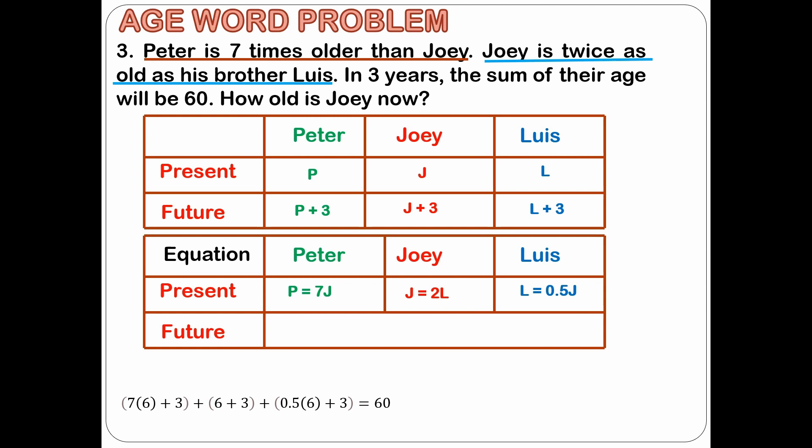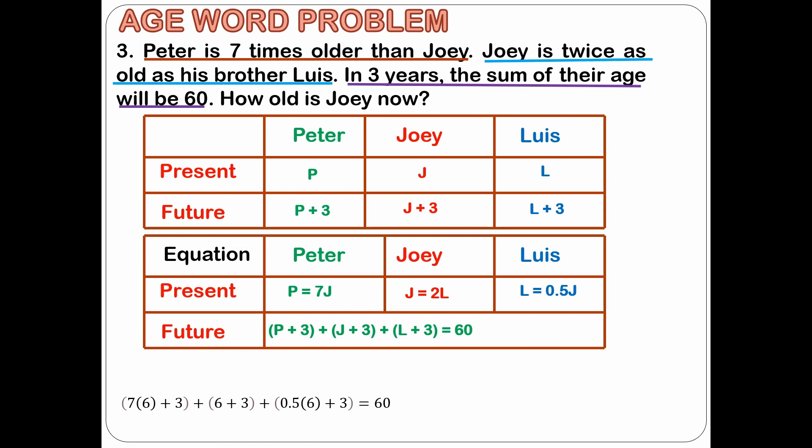Now we will write the equations for the future. In 3 years, the sum of their ages will be 60, so P plus 3 plus J plus 3 plus L plus 3 is equal to 60. From the problem we identify 3 equations and we have 3 unknown variables. Whenever you have 3 unknown variables, you need 3 equations to solve for those 3 variables. Let's use substitution. We will substitute 7J for P and 0.5J for L. The equation will become 7J plus 3 plus J plus 3 plus 0.5J plus 3 is equal to 60.